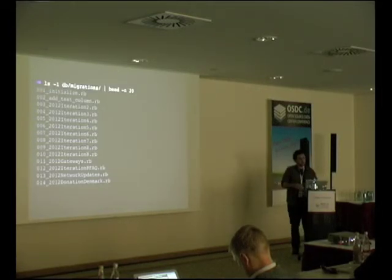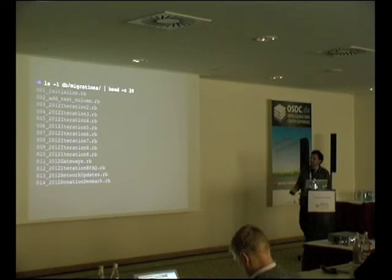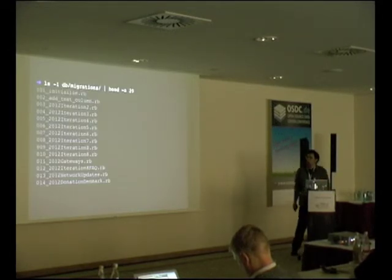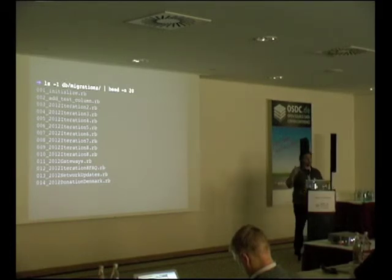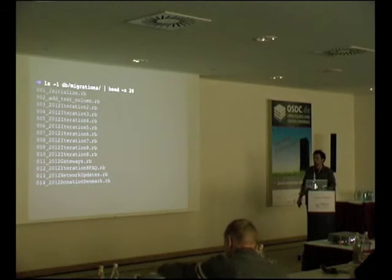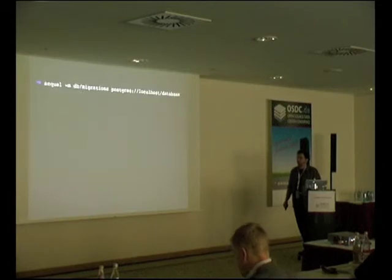In a Rails project, you have a database migrations directory with a bunch of files. When you run migrations against a database, it first works out where the database is currently up to — say at migration 009 — and then runs through all the migrations beyond that. There's an established pattern for solving this problem, and we want to use the same ideas.